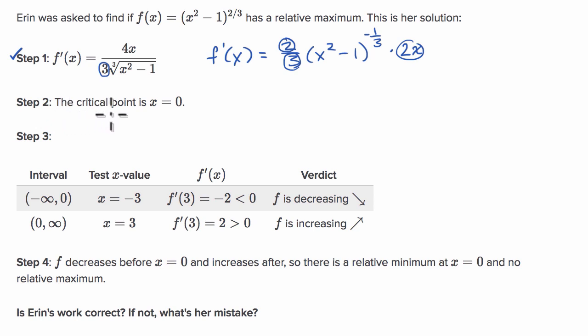Step two, the critical point is x equals zero. So let's see, a critical point is where our first derivative is either equal to zero or it is undefined.